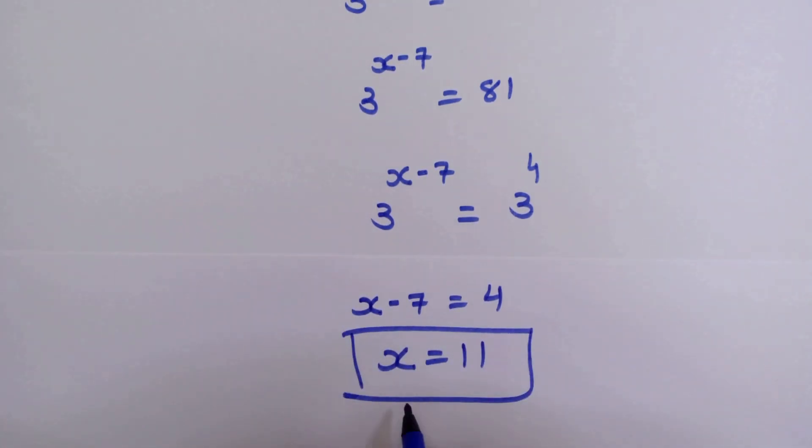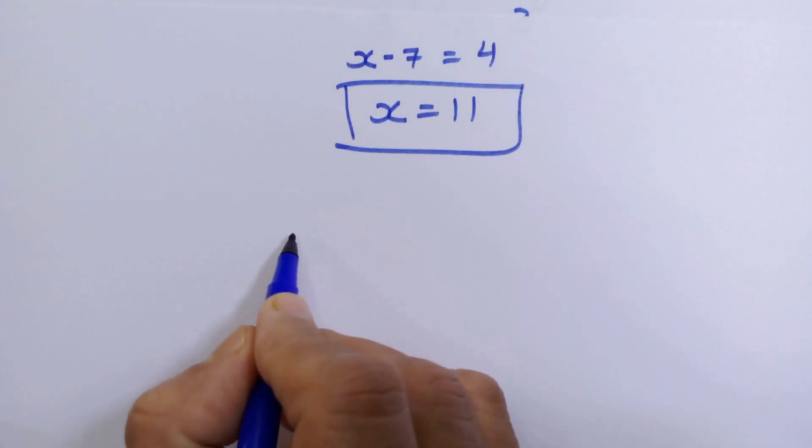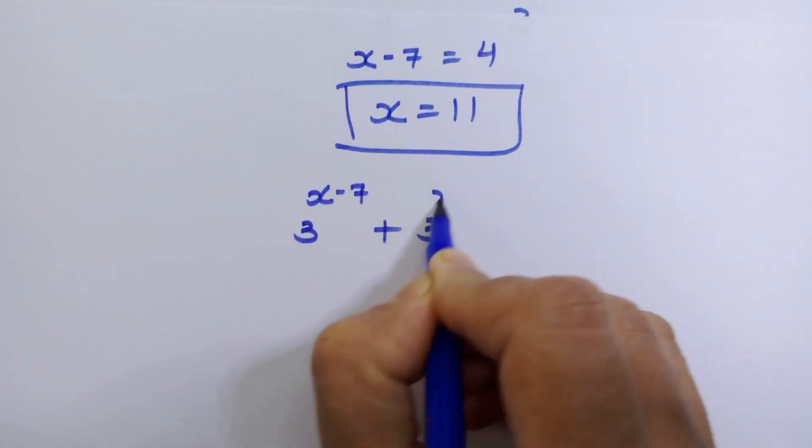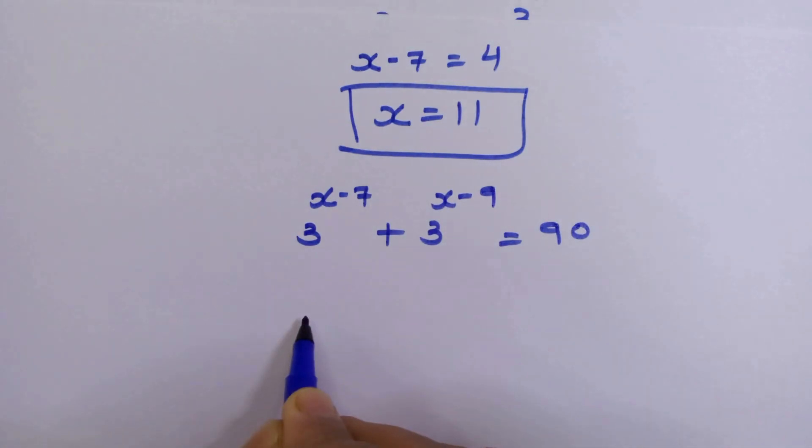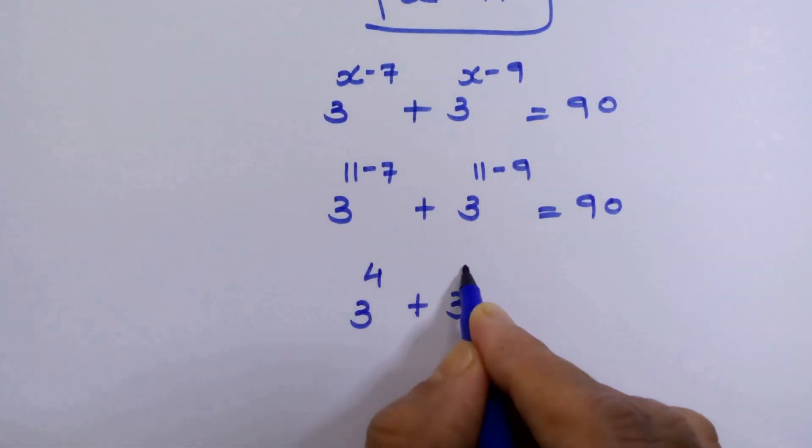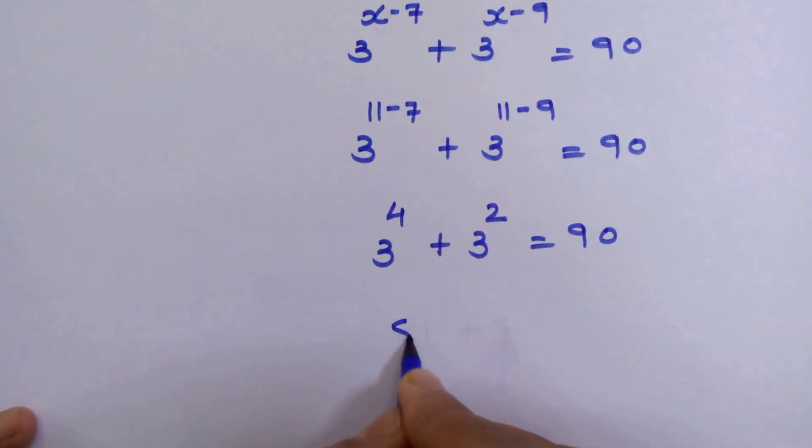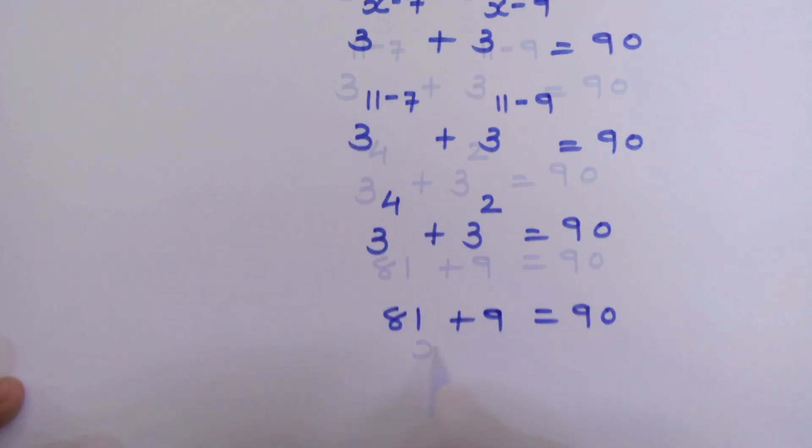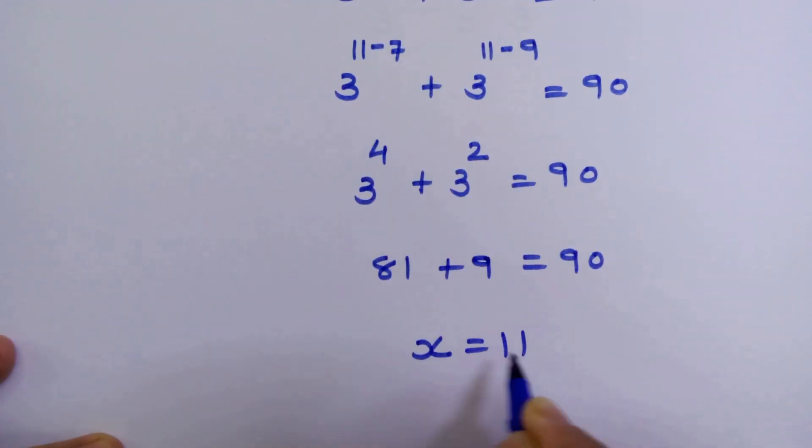Now we have the value of x. Let's put this value in the main equation to verify. So x equals 11 is the correct answer.